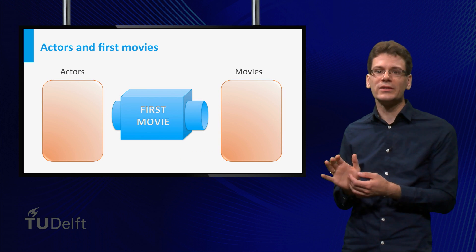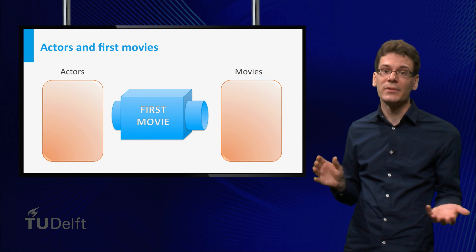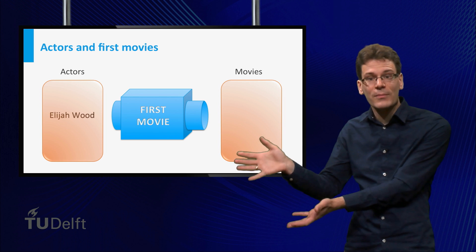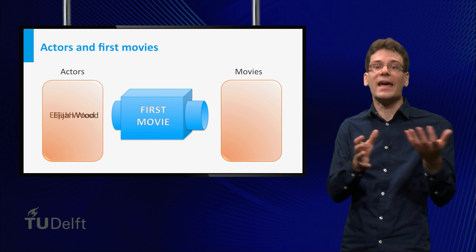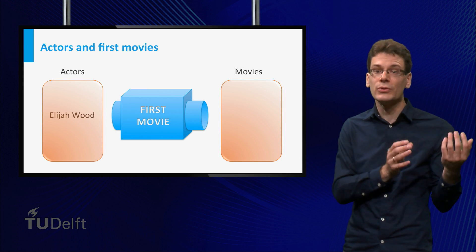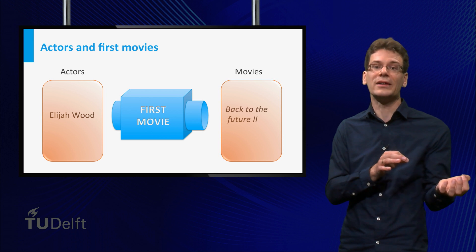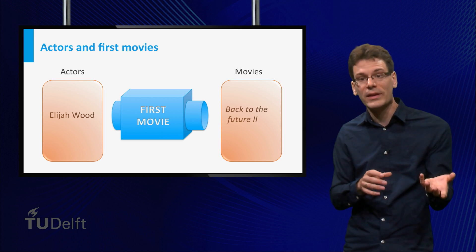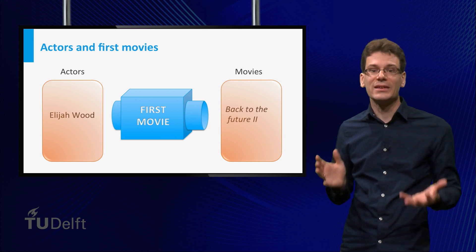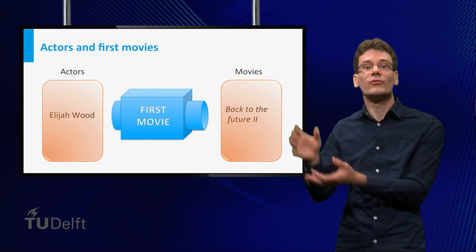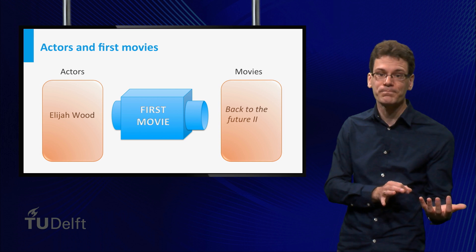Again, you can look at this program as an abstract machine that takes an element of the set of actor names as input, and then associates to that name exactly one element in the set of movie titles — namely the actor's first movie. We say that this is a function from the set of actor names to the set of movie titles.